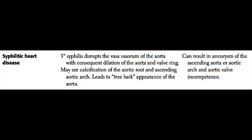Syphilis may also affect the heart — tertiary syphilis is known to disrupt the vasa vasorum of the aorta. Since the aorta relies on the vasa vasorum, or the smaller blood vessels around it, to feed the media and adventitia, disruption can cause dilatation of the aorta and the aortic valve ring. This can result in aneurysm of the ascending aorta and aortic arch, as well as aortic valve incompetence, insufficiency, and regurgitation. Patients may also have calcification of the aortic root and ascending aortic arch, leading to a so-called tree bark appearance of the aorta.